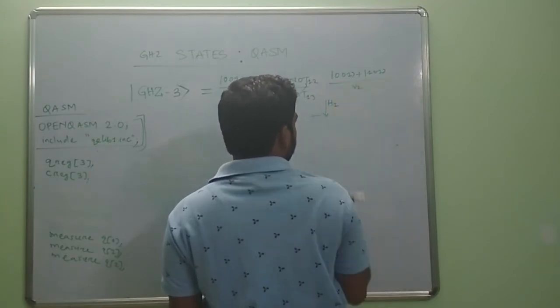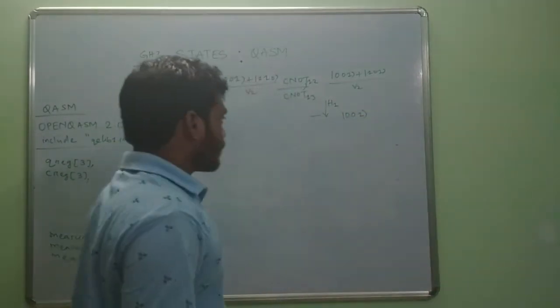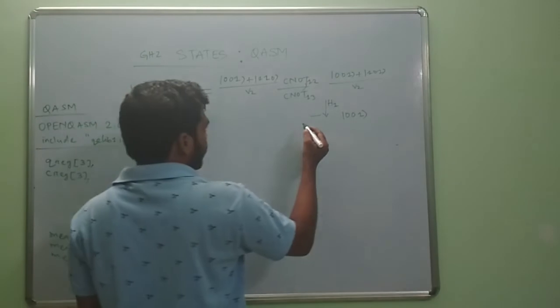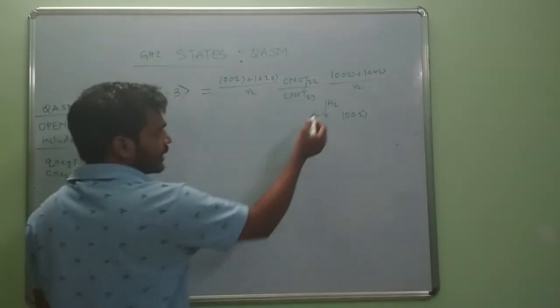Hence we can get 001. Now for preparing this state we can just go back because the gates are reversible.